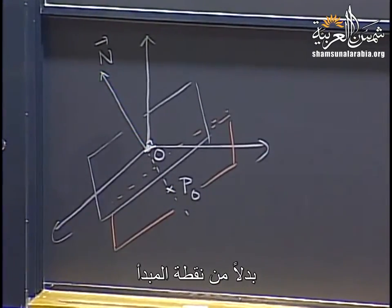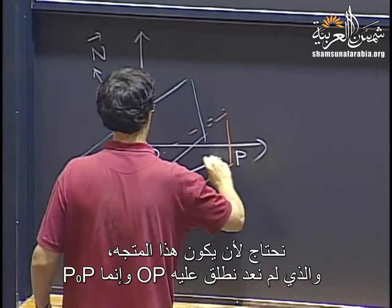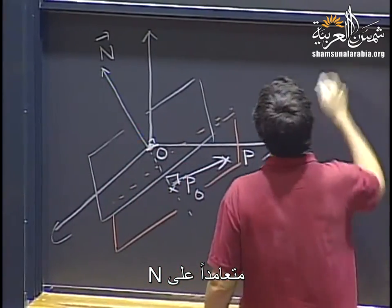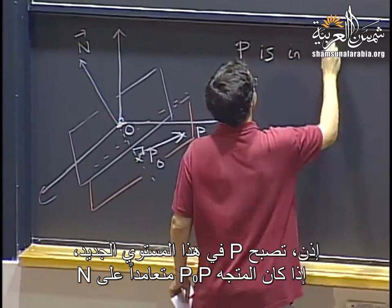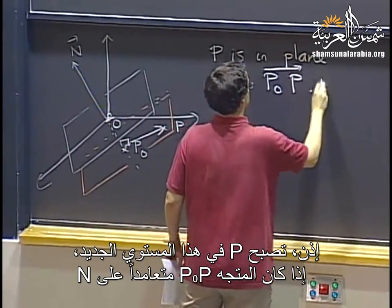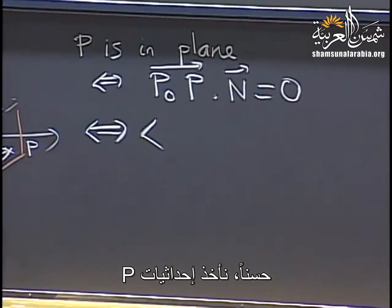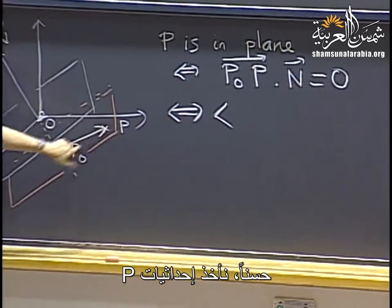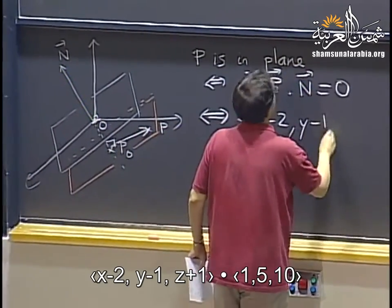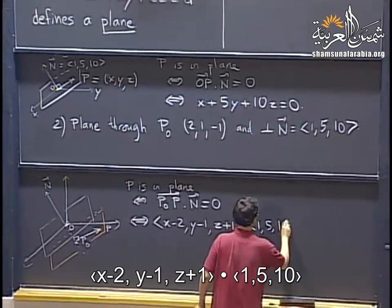For a point P to be in our new plane, we need the vector P0P to be perpendicular to n. P is in this new plane if vector P0P is perpendicular to n. Vector P0P has components x minus 2, y minus 1, and z minus 1 (subtracting the coordinates of P0 from P), and its dot product with 1, 5, 10 equals zero.